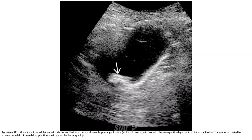This is an ultrasound of the bladder in an adolescent with a history of bladder exstrophy, showing a large echogenic stone with posterior shadowing at the dependent portion of the bladder. This may be treated by extracorporeal shock wave lithotripsy. Note the thickened bladder wall.